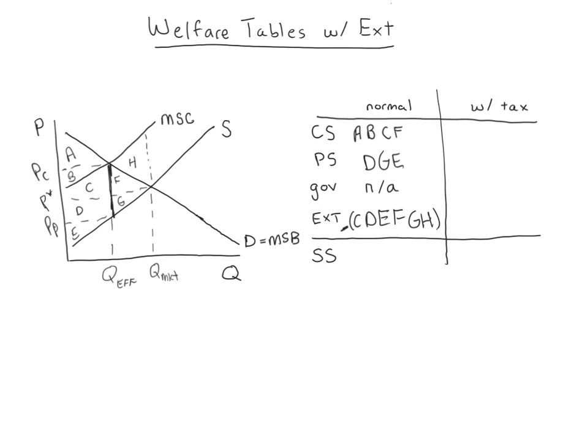Now we can do the analysis with the tax. Consumers, like normal with a tax, have been hurt — they just get A. Producers just get E. The government collects B, C, D in tax revenue — that's positive because they're getting the money. And then the externality has been reduced, so we're not producing Q market goods anymore. We shade in the externality only up to Q efficient because we only produce up to Q efficient goods — there's no cost of the externality beyond that. So the externality with the tax is just negative C, D, E.